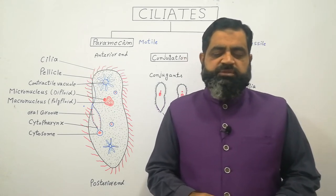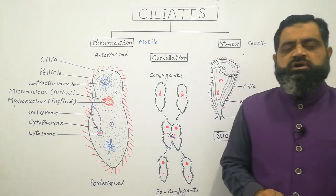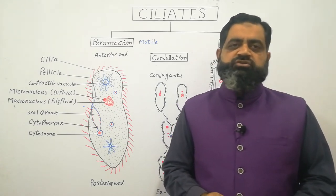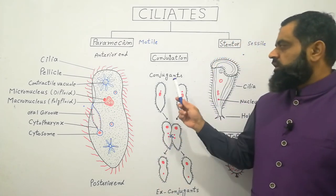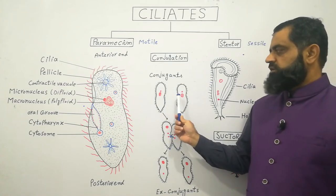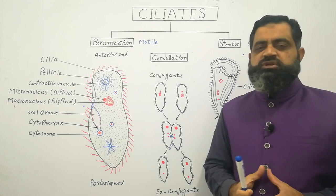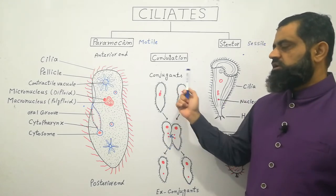They do a special process known as conjugation. Usually all ciliates do not do this process while some strains of paramecium are involved in the conjugation process. In this process two strains of paramecium which are compatible, you cannot say male or female but you can say positive or negative strains, they come across each other. These are called conjugants.